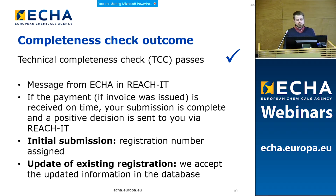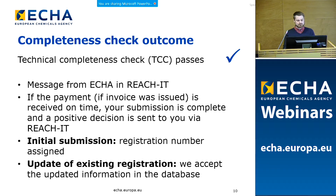Now I am going to talk about the possible outcomes of the completeness check and their consequences. If the technical completeness check passes and it was an initial submission, then you will get a registration number. If you update an existing registration, then we accept the updated information into our database, making it available for further processing by ECHA. You will get a message in REACH-IT, and if a payment invoice was issued, then you need to pay that as well.